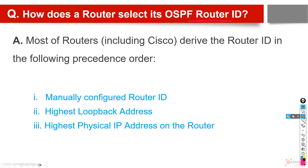Let's see the rules. The first rule: the router gets its router ID manually if we give the command router-id and manually provide an input — that okay, we want this ID to be the router ID. Then it picks that one. This is the first preference.